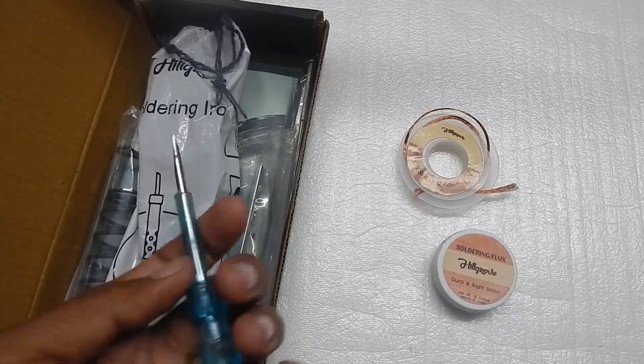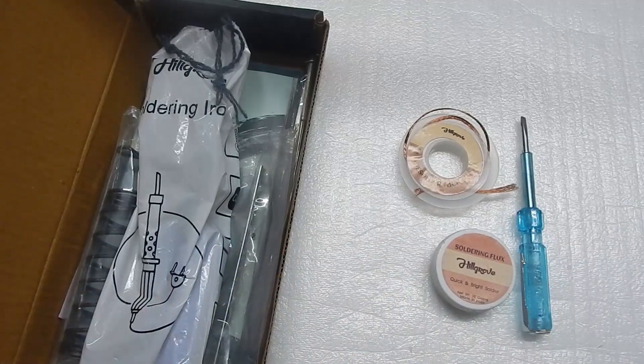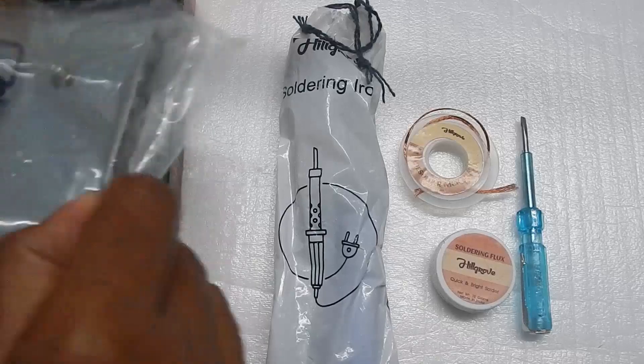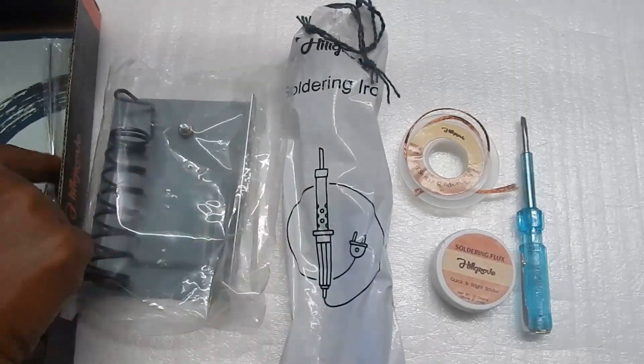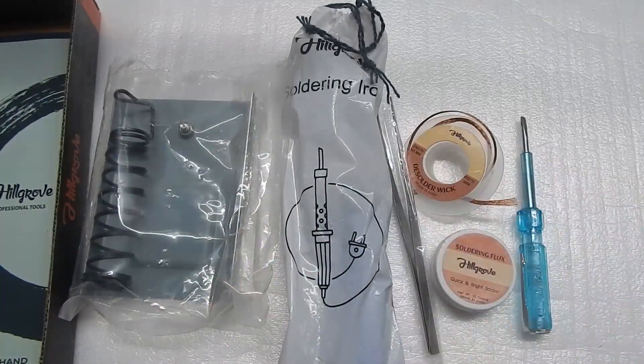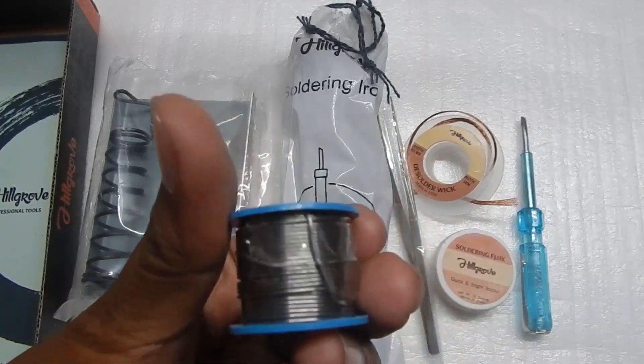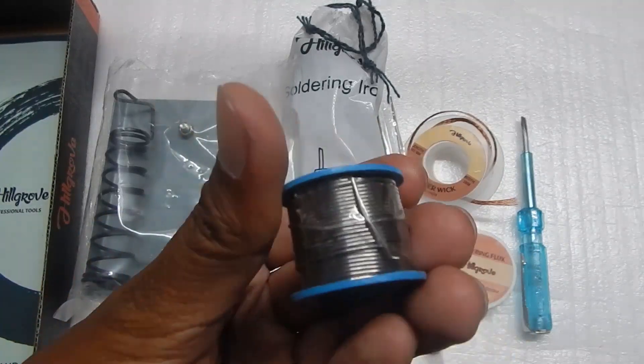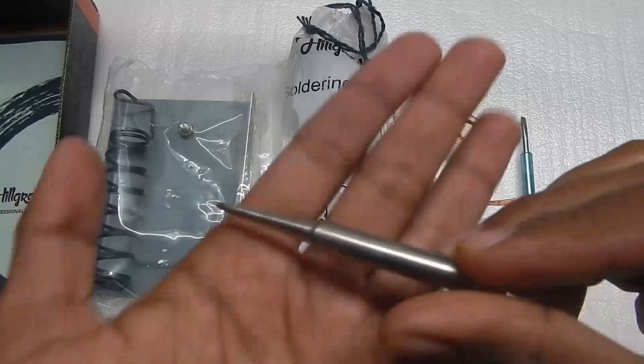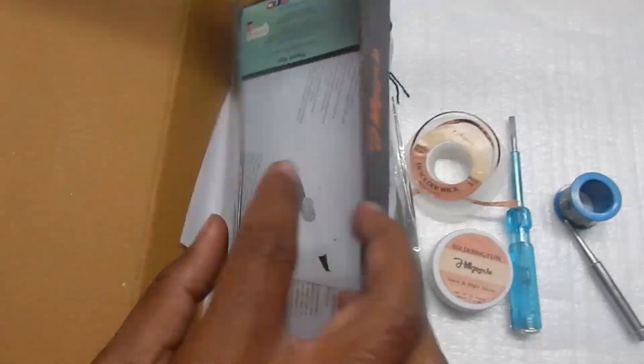You get a small line tester, the soldering iron itself, a soldering iron stand, small tweezers to grab things, about five meters of soldering wire that's 0.71 millimeter, and finally a pencil style extra bit. This is about a 25 watt soldering iron.